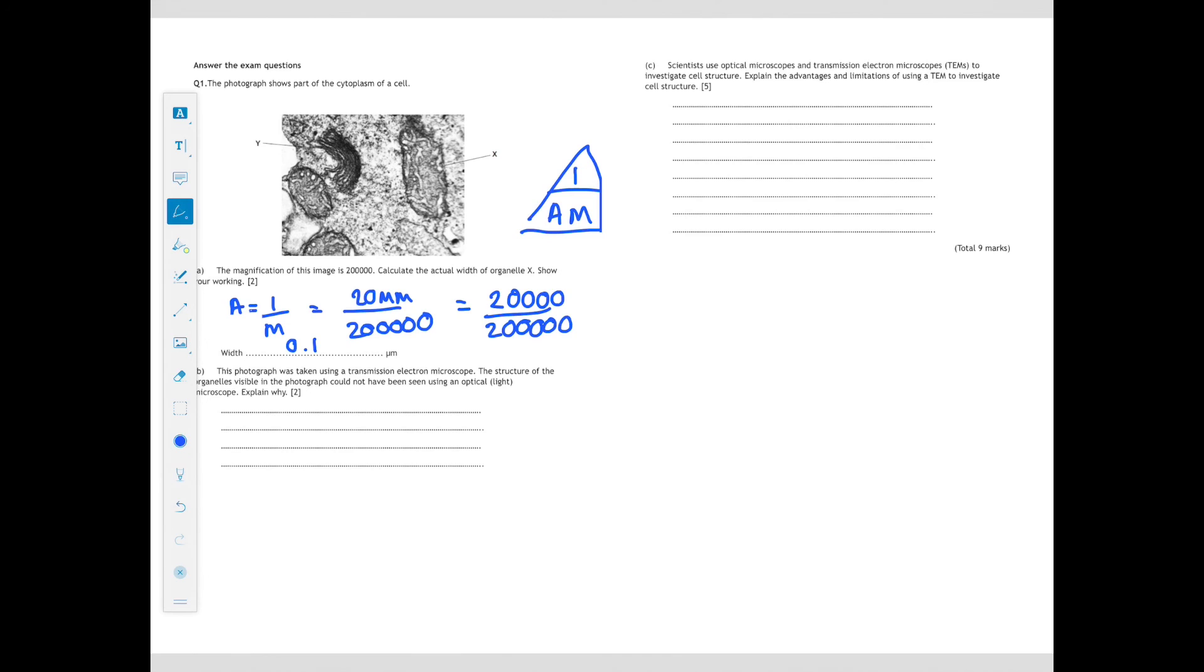Scientists use optical microscopes and transmission electron microscopes to investigate cell structure. Explain the advantages and limitations of using a TEM to investigate cell structure. It's a nice straightforward factual question worth five marks, so give five separate points. First of all, advantages are that very small objects can be viewed and that the TEM has a high resolution. That's due to the fact that the wavelengths of electrons are much shorter than that of a light wave. Disadvantages however is that the specimens must be dead, so you can't look at living cells. It must occur within a vacuum because we don't want the air particles colliding with those electrons. And lastly, it produces a black and white image which requires coloring up afterwards. I hope you found this video really helpful. Don't forget to sub if you haven't already and to give it a like and I'll be back soon. Bye guys!